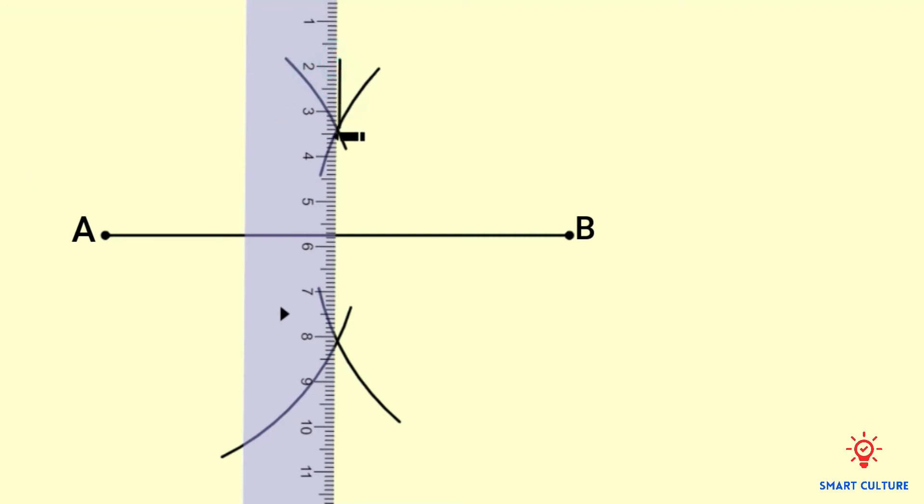This line segment CD is the bisector of AB. You'll notice that CD is also perpendicular to AB. So that means CD is a perpendicular bisector.